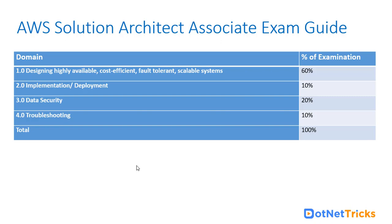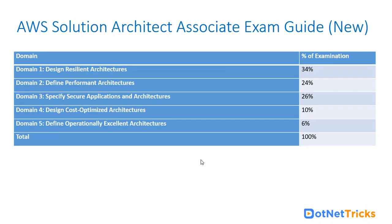The second domain is implementation and deployment at 10%, data security at 20%, and troubleshooting at 10%. In total, they make up 100% of the solution architect associate exam. From February 2018, a new exam guide was introduced as AWS endeavoured to keep its certification very much industry relevant as well as highly competitive. That doesn't mean that those preparing for the older version should change their practice, preparation ways, or preparation material. The foundational services are the same.